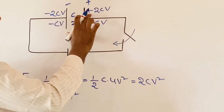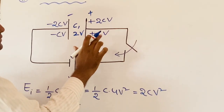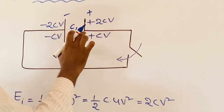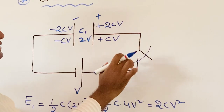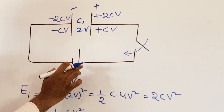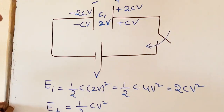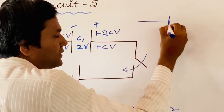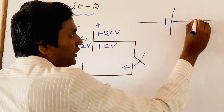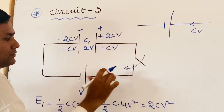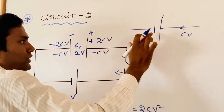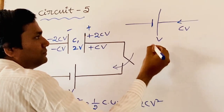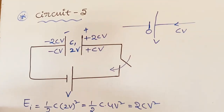You can clearly observe: previously the charge was 2CV, now it is CV. So CV amount of charge has been lost by this plate, and CV amount of charge passes through the battery from the positive to negative terminal. The positive terminal is at potential V, and the negative terminal is at 0.